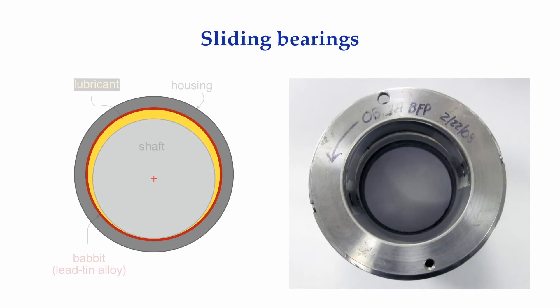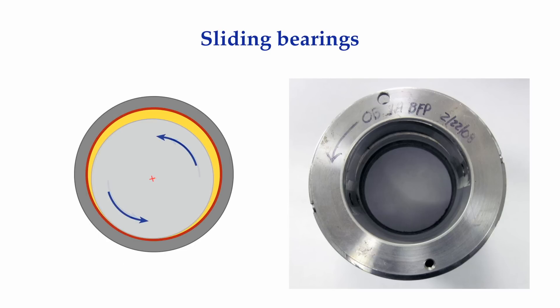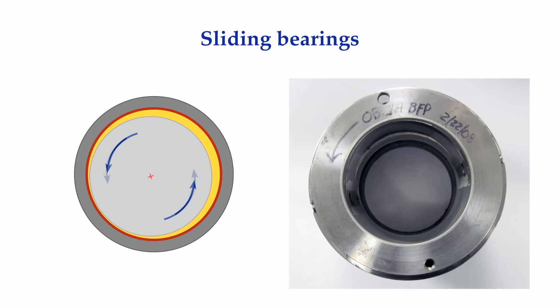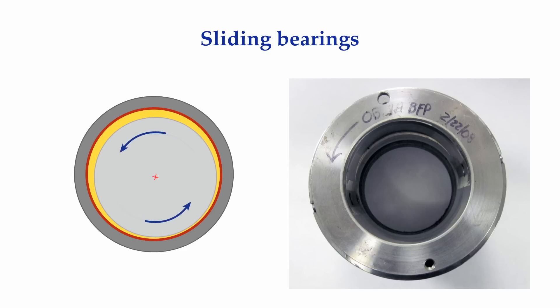There are two types of bearings typically used in rotating machinery: sliding bearings and rolling element bearings. The oldest bearing known to man is a sliding type bearing. In its simplest form, a rotating shaft is supported in a hollow cylinder, riding on a thin film of lubricant. As the shaft rotates, a wedge of oil forms between the shaft and bearing, lifting the shaft upward. Once the oil wedge is formed, the shaft typically moves to one side and does not run in the exact center of the bearing. This oscillatory shaft motion is what we refer to as vibration.